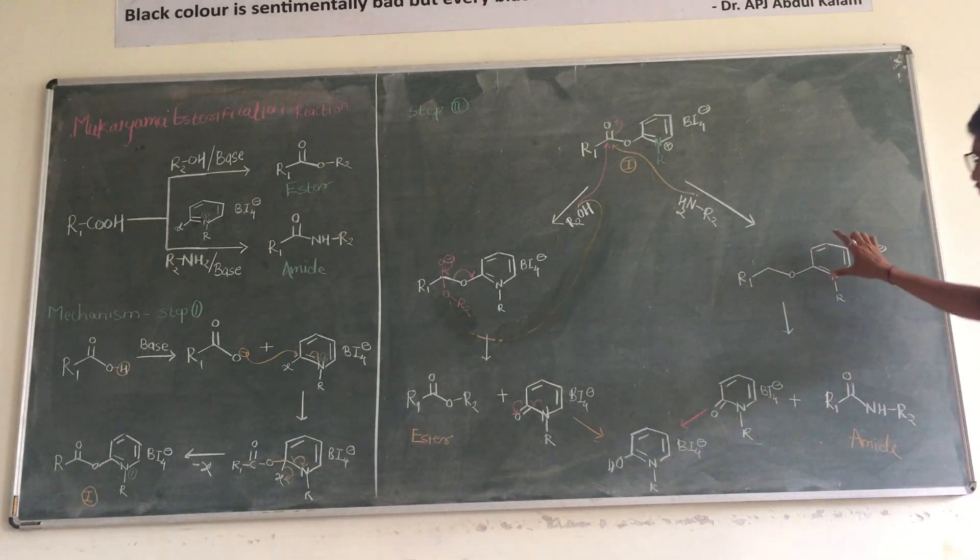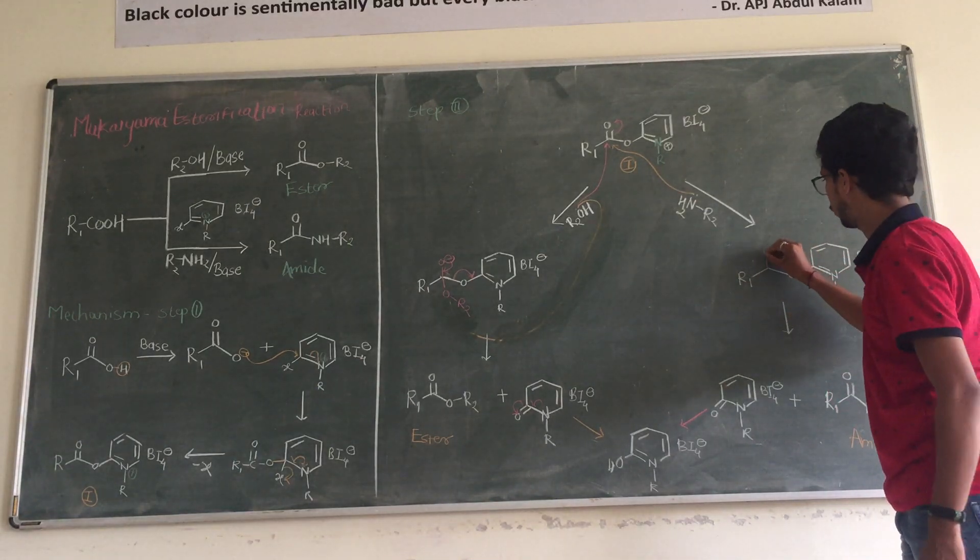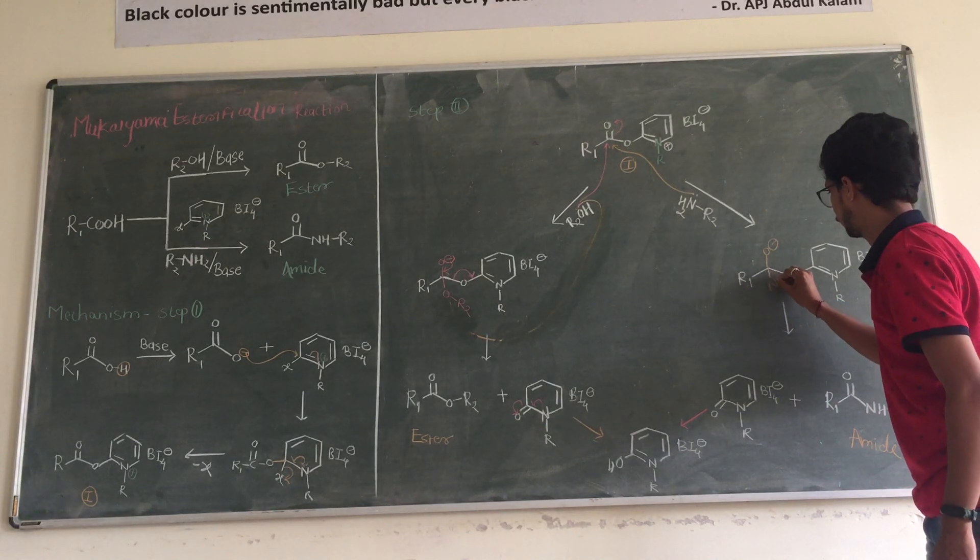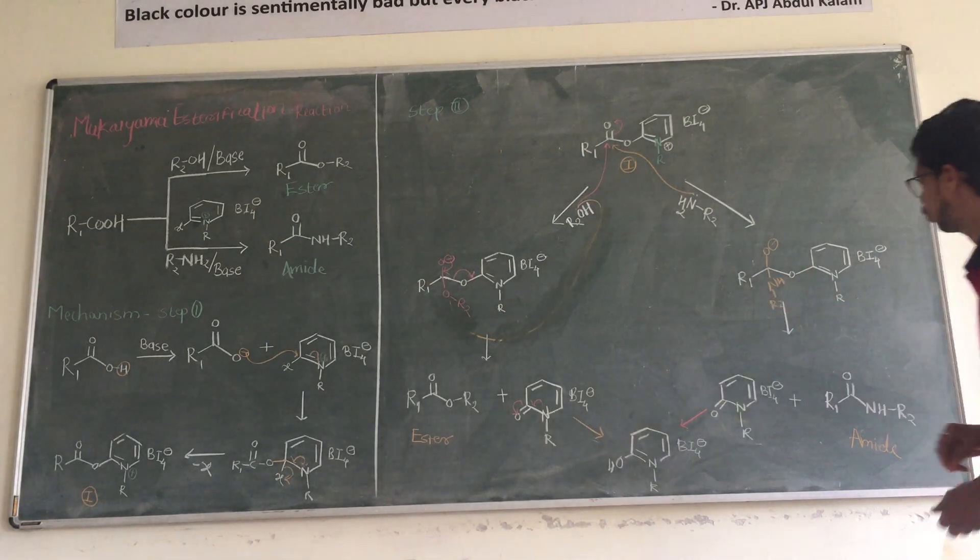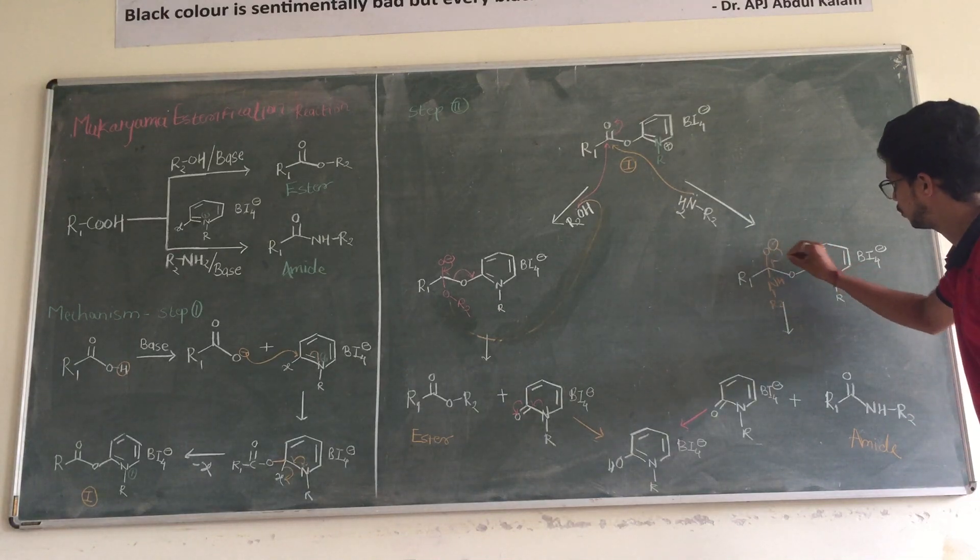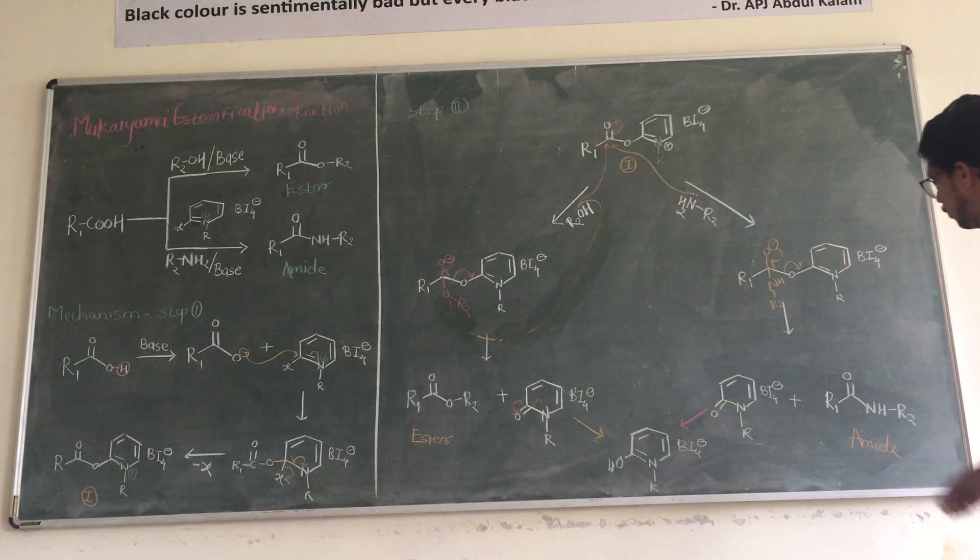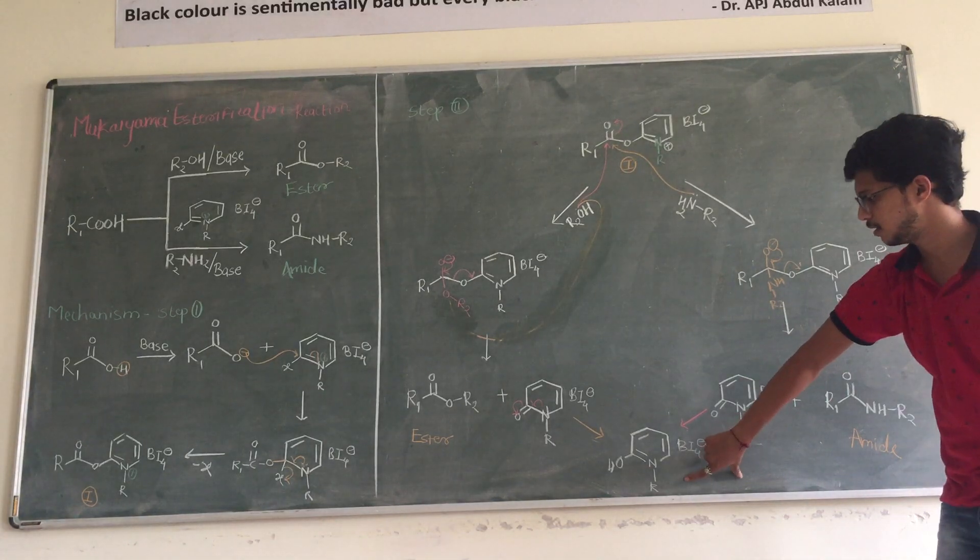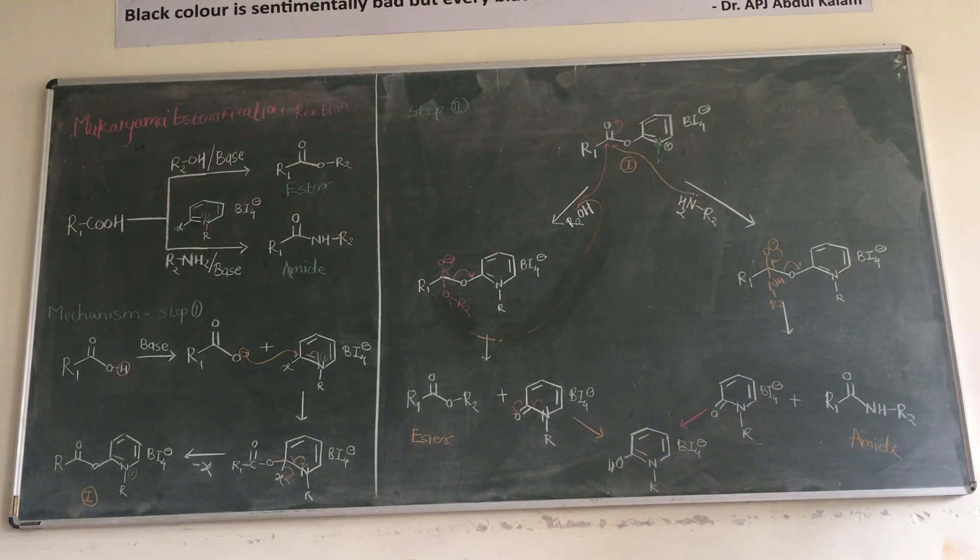Here it is O minus NH R2. The O minus will shift here, the bond shifting will be here and product is an amide. And this is Mukaiyama reagent as it is.